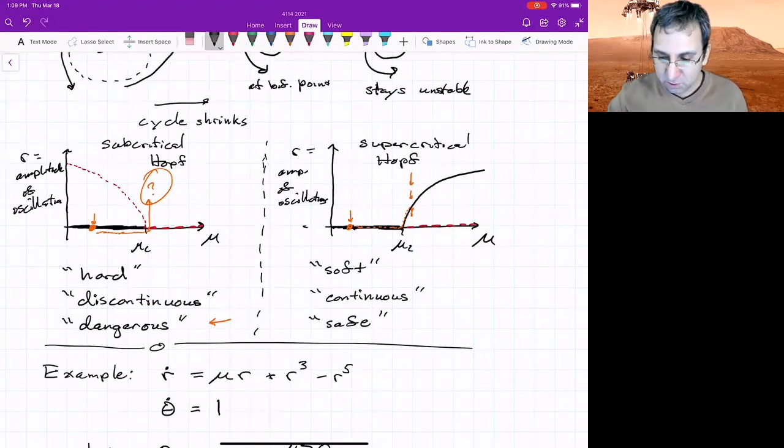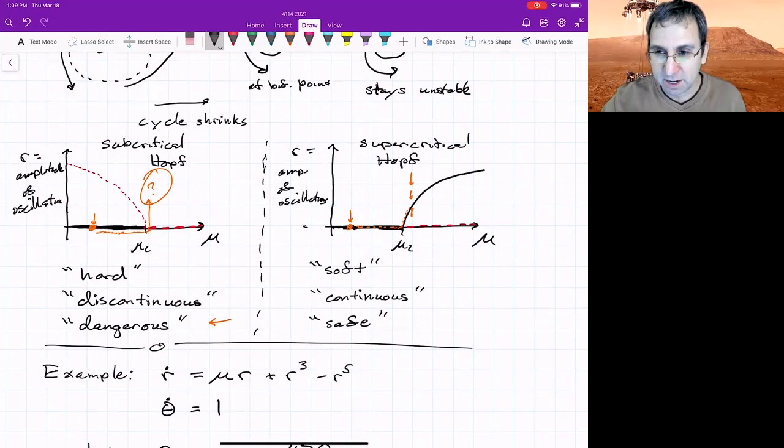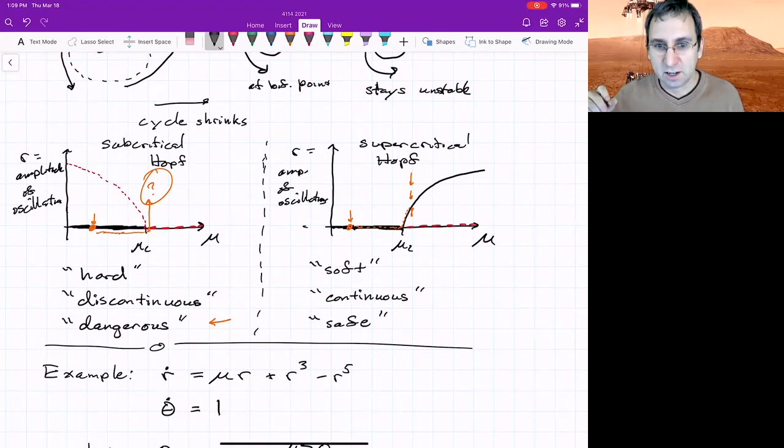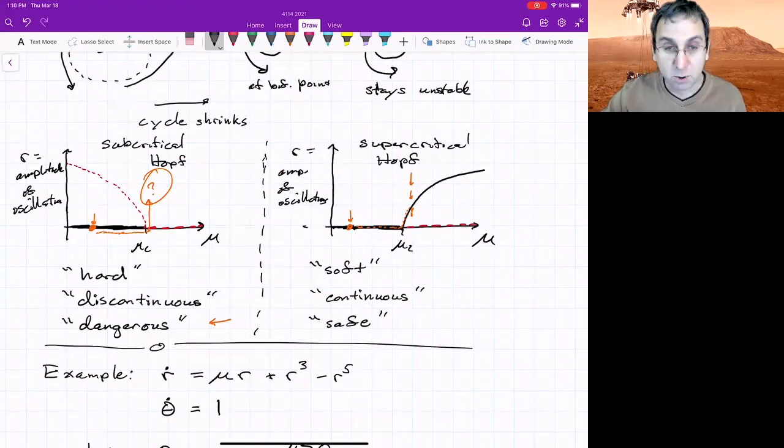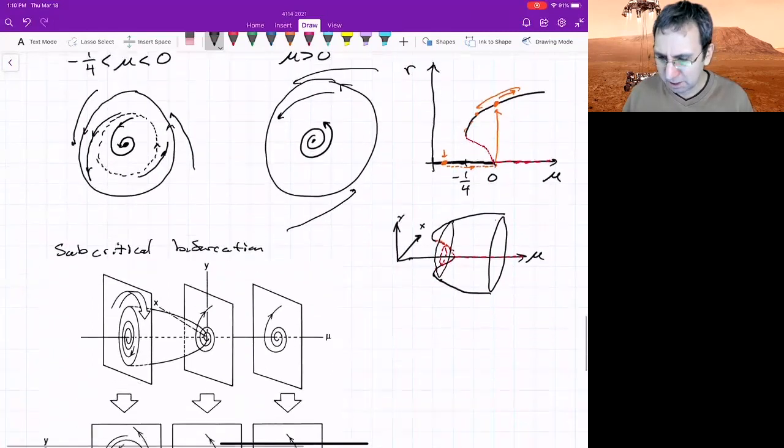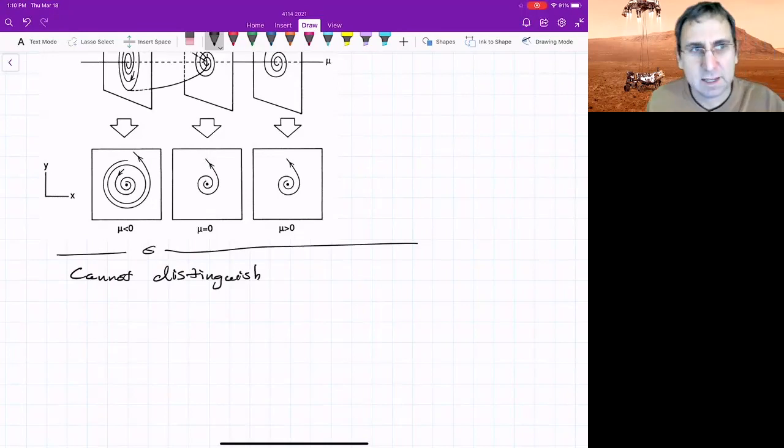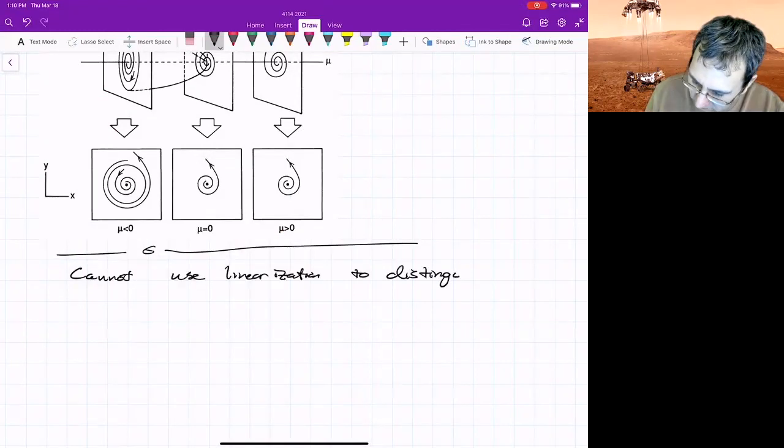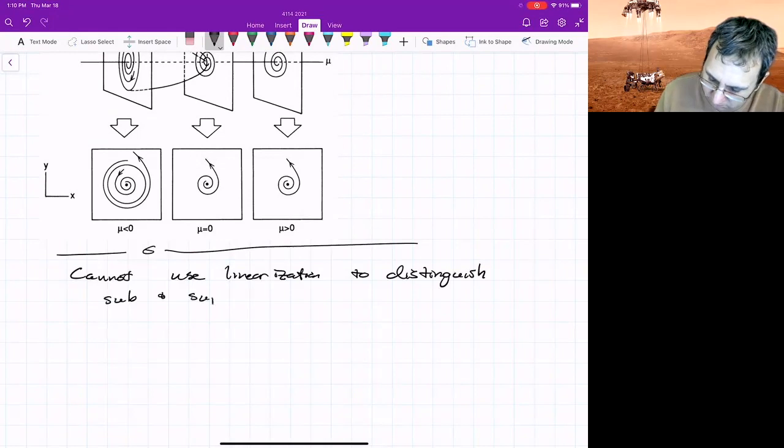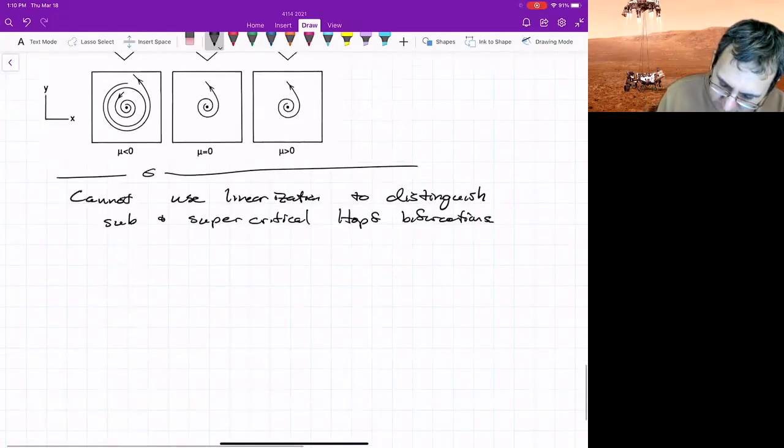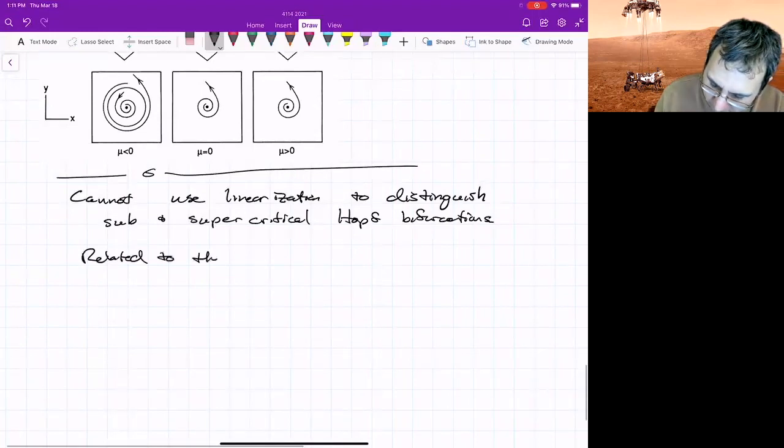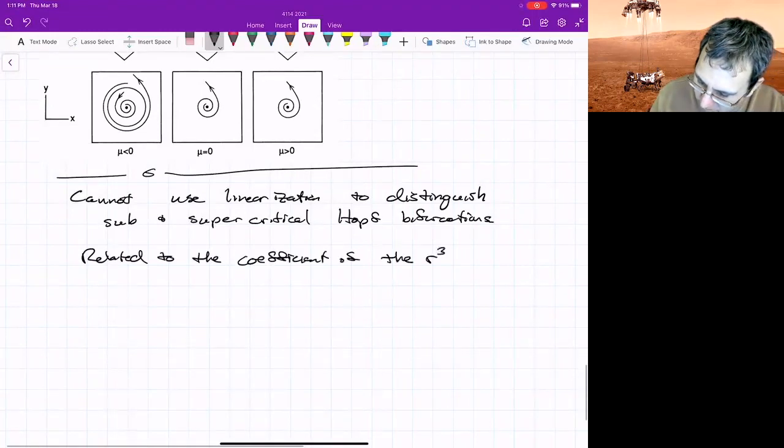Knowing whether or not you have a subcritical or supercritical Hopf bifurcation can't be distinguished from just the linearization. You need to look at the nonlinear terms. In particular, it's related to this, at least in polar coordinates, related to the sign of that cubic term. There are analytical criterion, but they are complicated. But that's kind of worth saying here that you cannot distinguish, right, since they have possibly very different consequences for a system. You want to be able to do this. You cannot use linearization to distinguish sub and supercritical Hopf bifurcations.